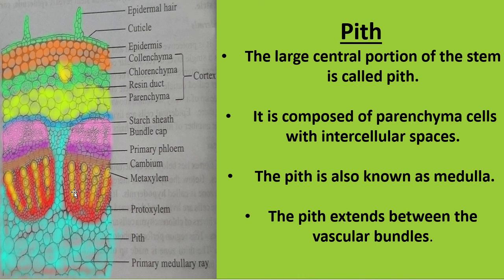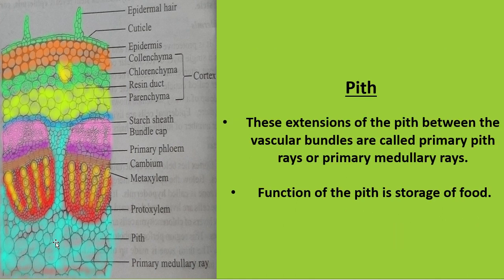The pith is the large central portion of the stem, composed of parenchyma cells with intercellular spaces — the blue colored cells. The pith is also known as medulla. The pith extending between the vascular bundles is called primary pith rays or primary medullary rays. The pith plays a role in storage of food material. The large-sized xylem is called metaxylem, and the small-sized xylem is called protoxylem.